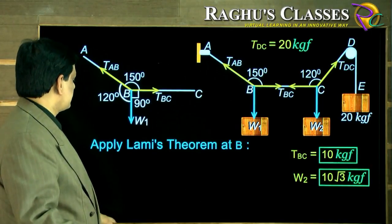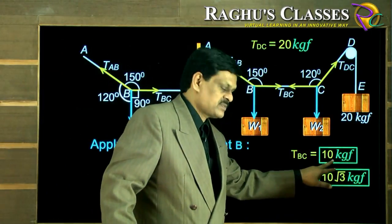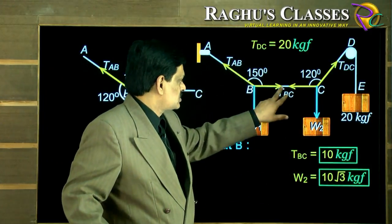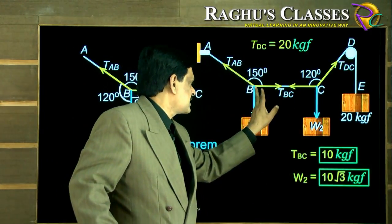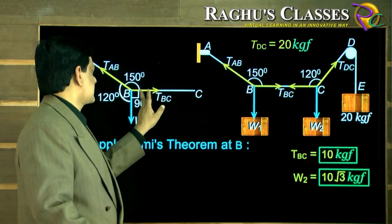Now if you apply Lami's theorem here to this junction, one force is known because here we have TBC 10 kgf. 10 kgf to the left means here 10 kgf to the right at equilibrium. So this is known as 10 kgf.